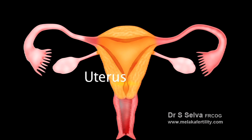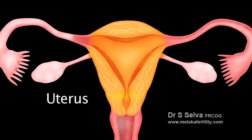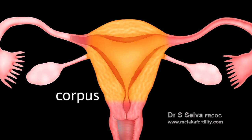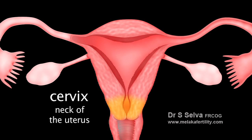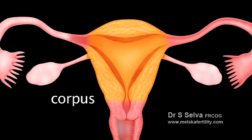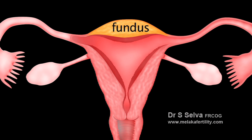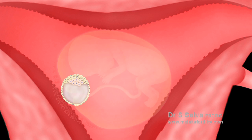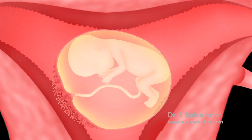The uterus or womb is a hollow pear-shaped organ with a thick muscular wall. It is subdivided into two parts: the corpus or body of the uterus and the cervix or neck of the uterus. The corpus comprises the fundus, which is the top portion of the uterus, and the cavity of the uterus, where the embryo and fetus develops during pregnancy.